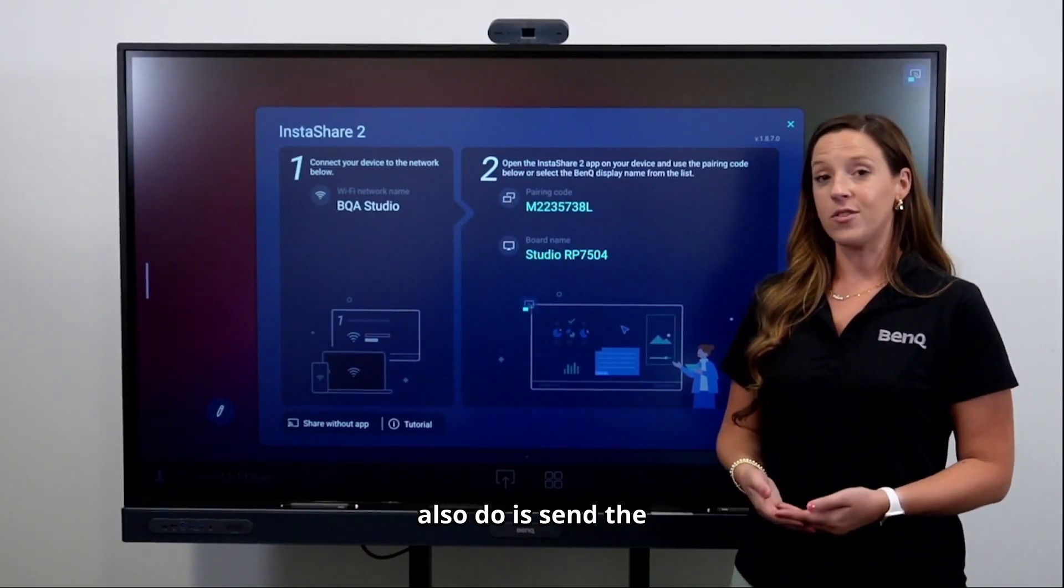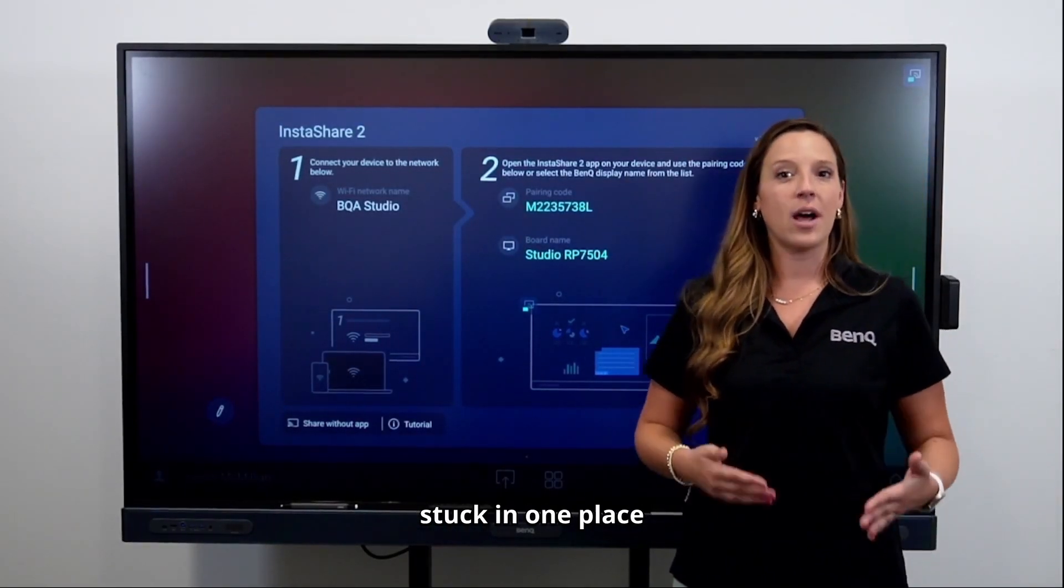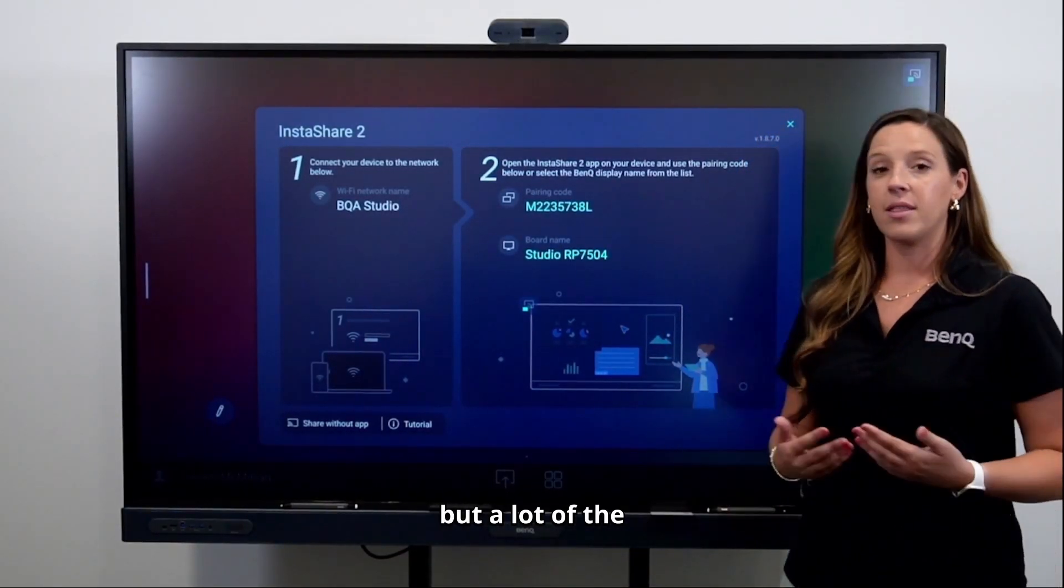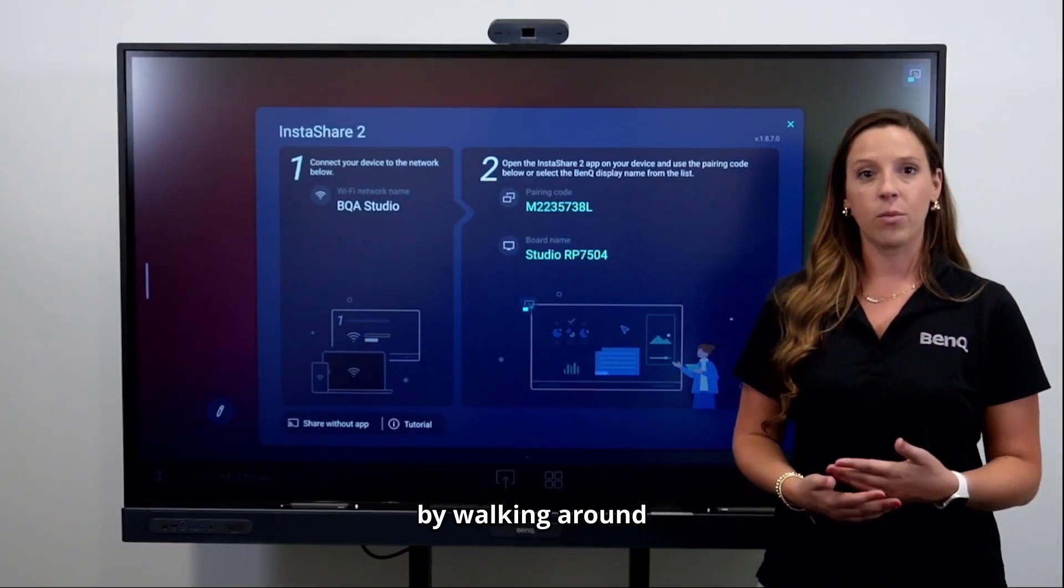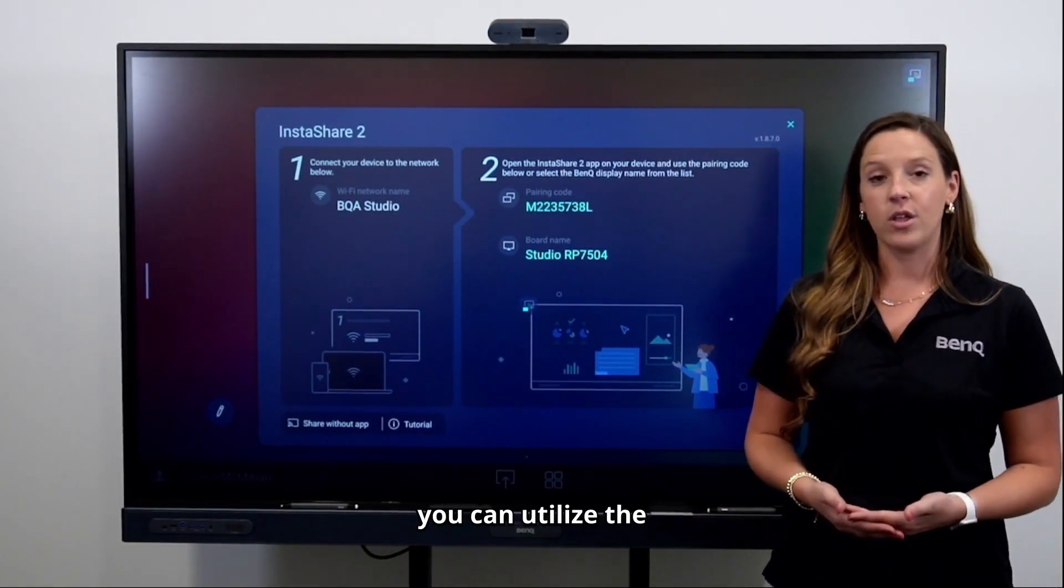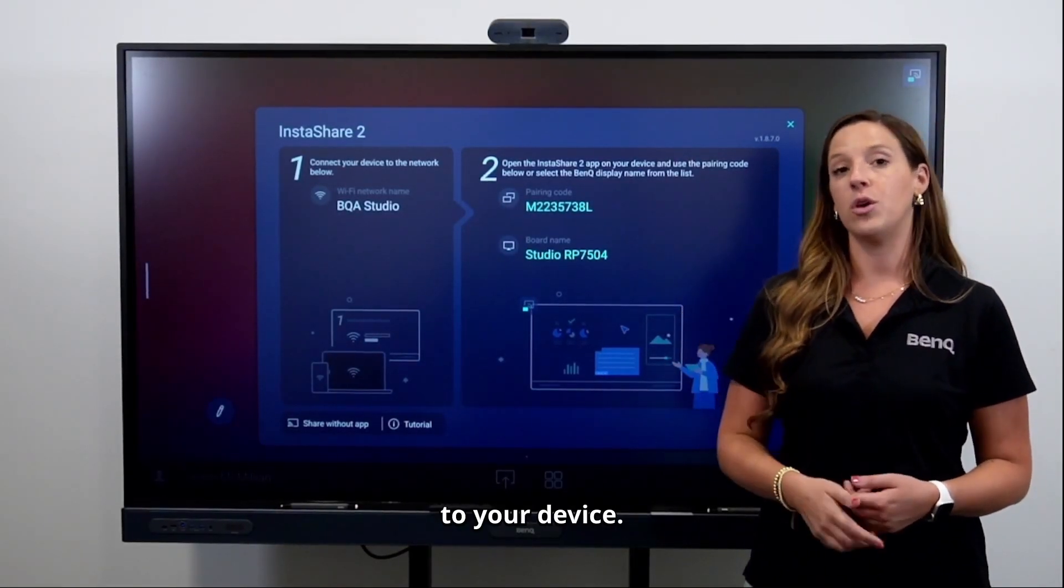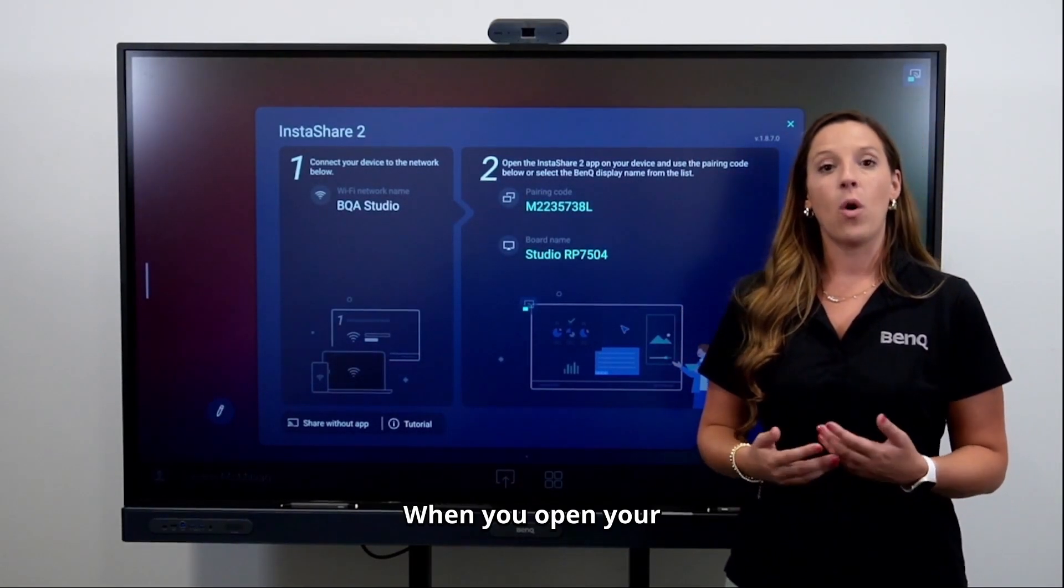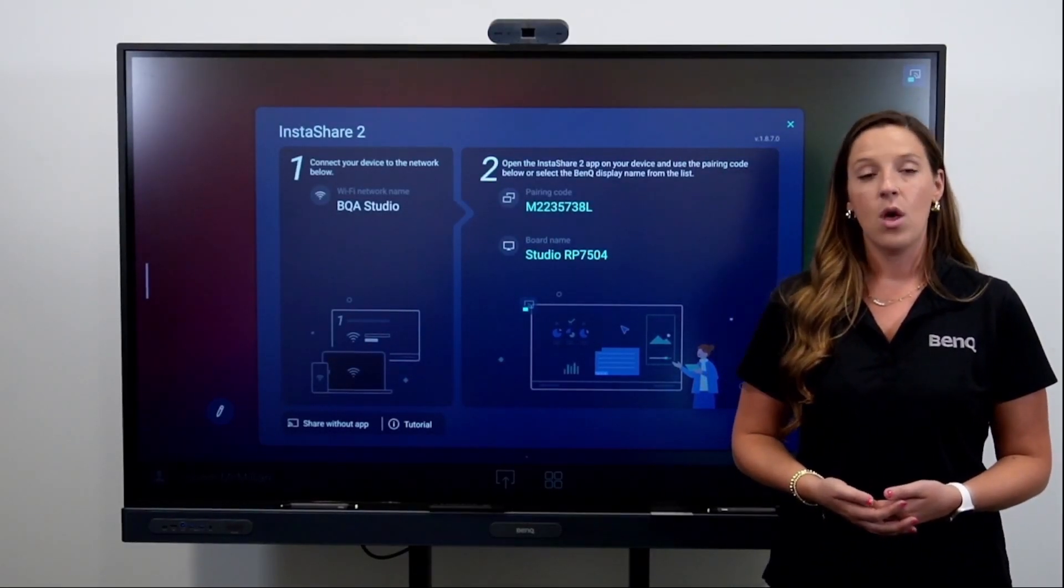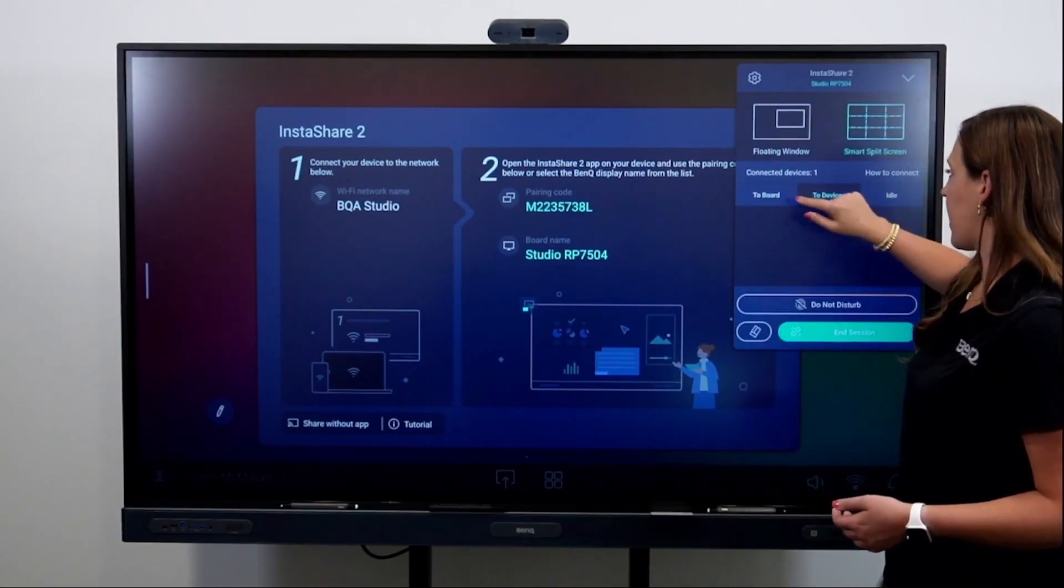But one thing you can also do is send the board to your device. Too many times we're stuck in one place in the classroom, either at your computer or at the board, but a lot of the learning happens by walking around and facilitating those incredible student conversations. So you can utilize the InstaShare 2 app and send the board to your device. When you open InstaShare and connect to the board, you're given a couple of options. One of those options is cast from the board to the device.